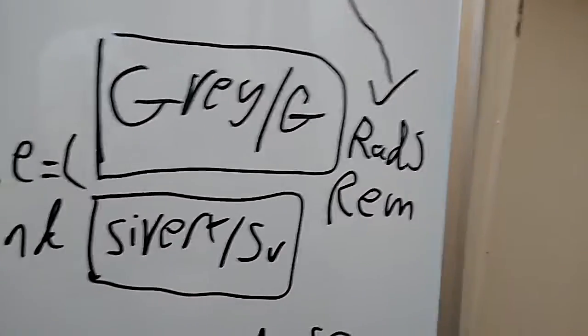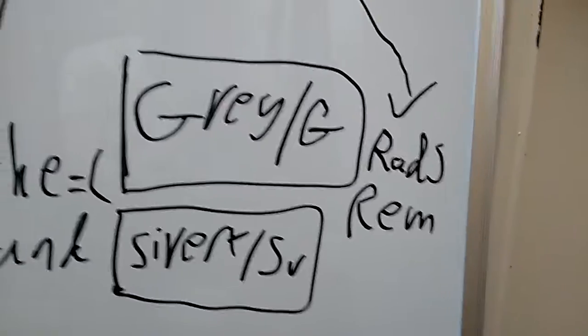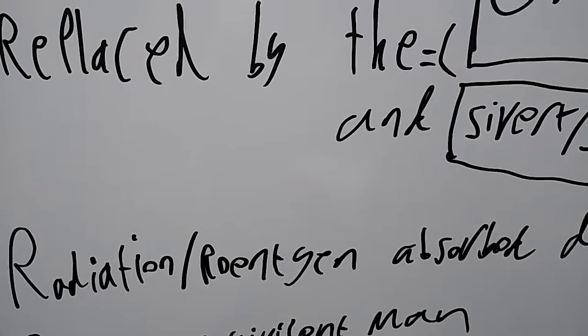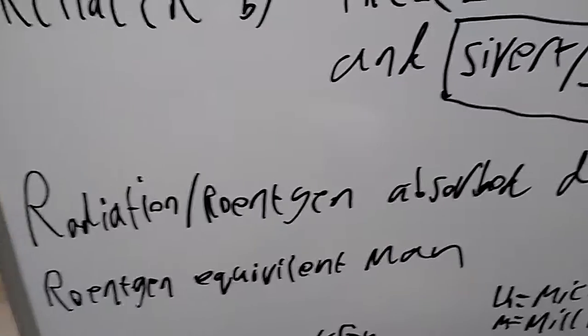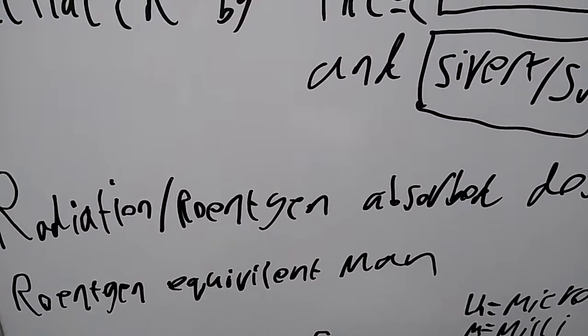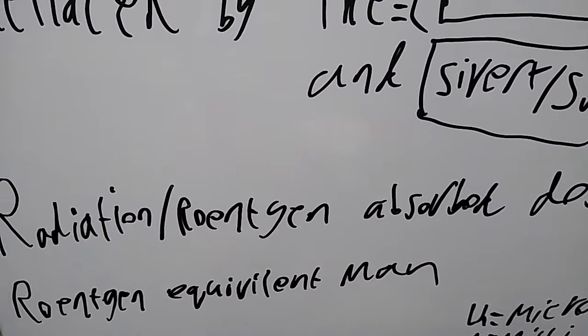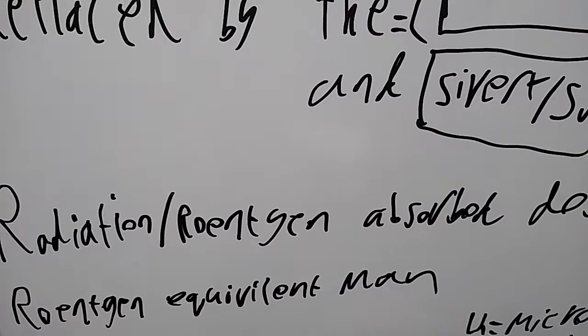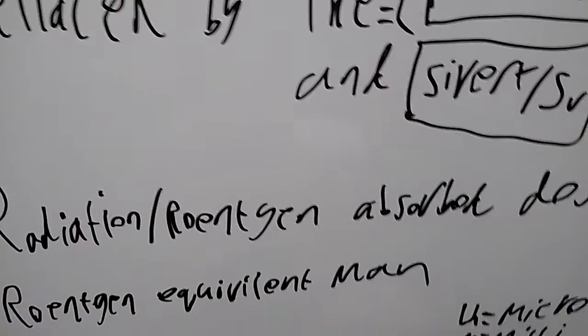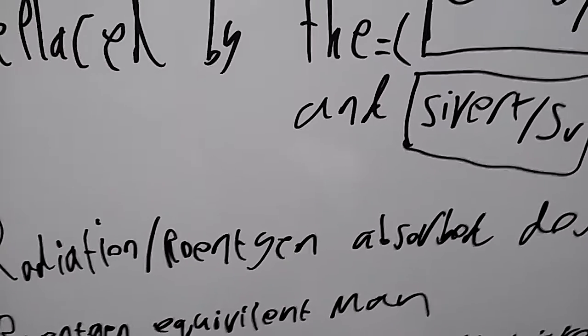You also have the less commonly used RADs and REMs. Now, the RAD and the REM stand for Radiation or Röntgen Absorbed Dose, and REM is the Röntgen equivalent man. So basically, both these units, RADs and REMs, one RAD is equal to one REM. So they're two different units, but essentially they are the same thing.